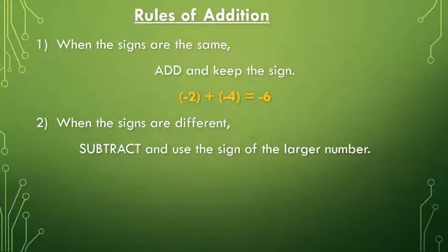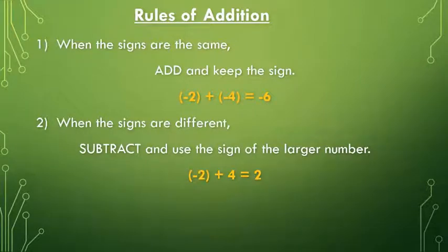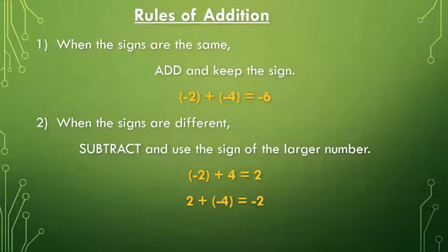When the signs are different, we have to subtract and use the sign of the larger number. For example, minus 2 plus 4 is equal to 2, or also 2 plus minus 4 is equal to minus 2.